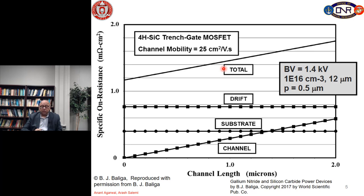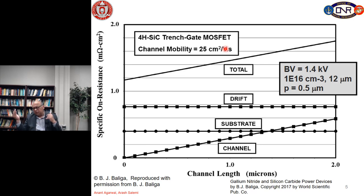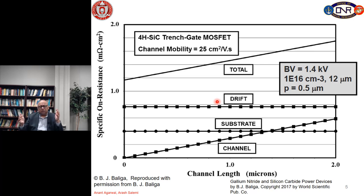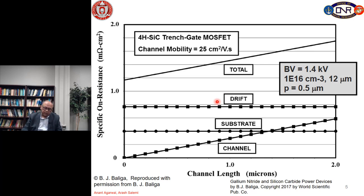The trench MOSFET is already very competitive with — in fact, much better than — the planar D MOSFET for 1.4 kV devices, for two reasons: the pitch is very small and the vertical mobility is higher than in the x direction. Trench MOSFET makes sense up to 1700 volt devices. Above 1700 volts, the drift layer resistance dominates and there is probably no advantage of making a trench MOSFET. So 1700 V and below, trench MOSFET makes a lot of sense — especially for 900 V and 600 V devices.